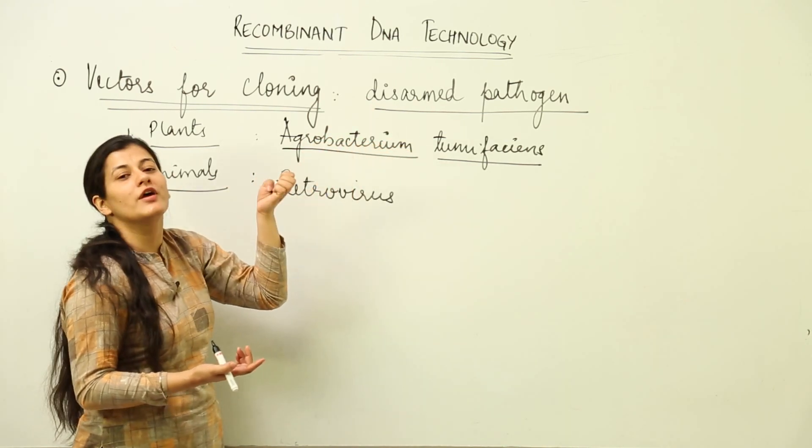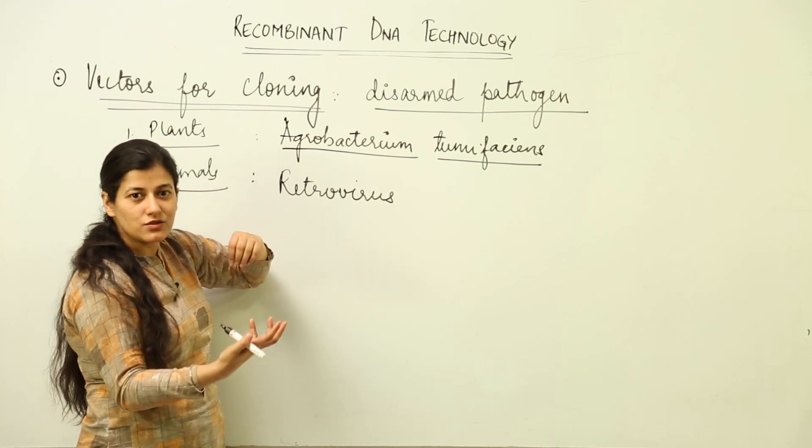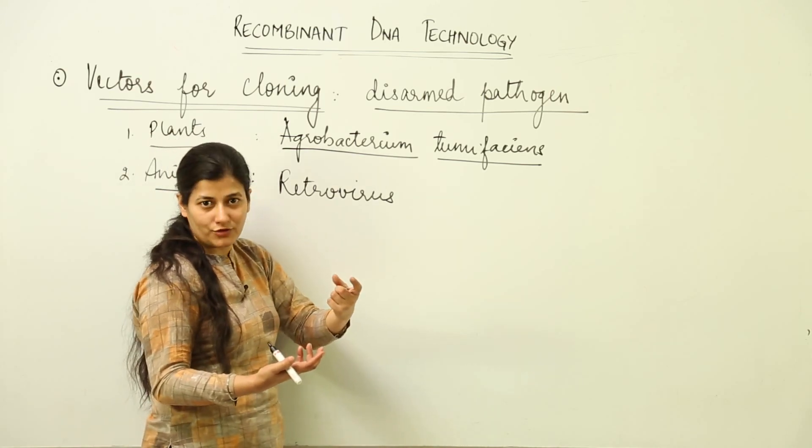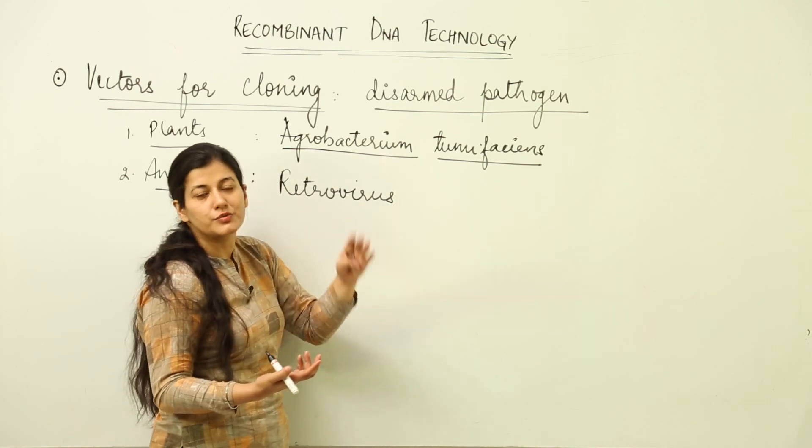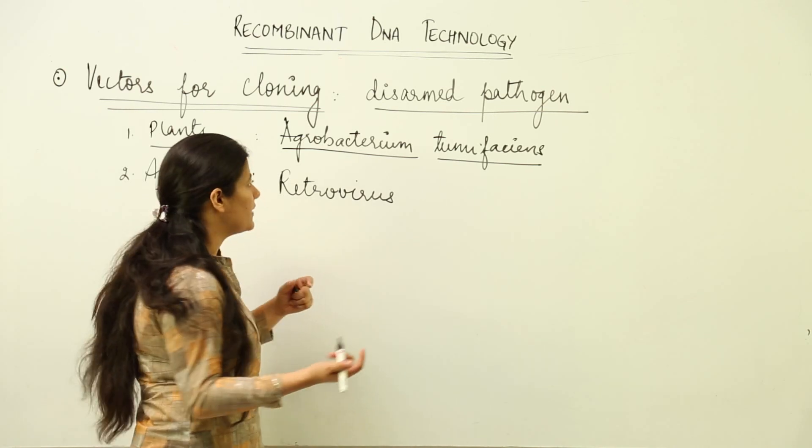So it would act as our vector. That is a disarmed pathogen. The pathogen has been disarmed or robbed of its pathogenic activity, its disease-causing ability, and instead our purpose is being solved as we give our gene of interest to that pathogen, and that has the innate ability of infecting.